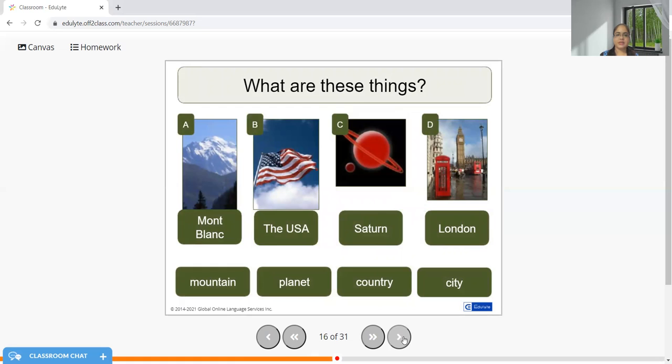Now what are these things? Let us try to match them together. Mont Blanc is a beautiful mountain. The USA is a country. Saturn is a planet. London is a city.